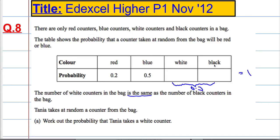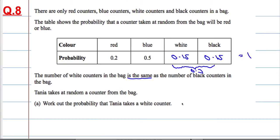The probability of getting white or black must be 0.3, which means that the probability of getting white must be 0.15. The probability of black must be 0.15 as well. So the probability that Tanya takes a white counter is 0.15.